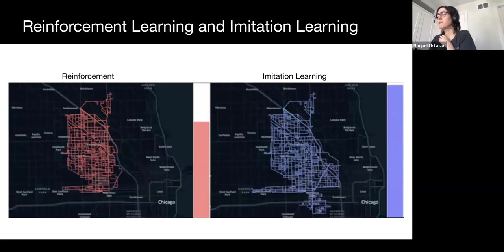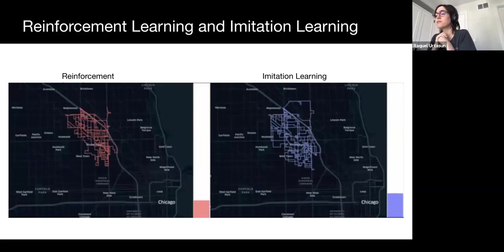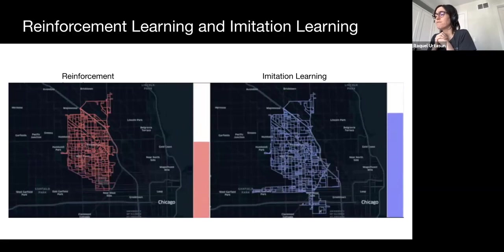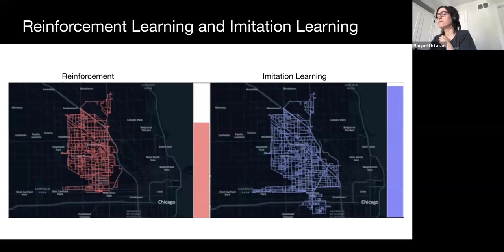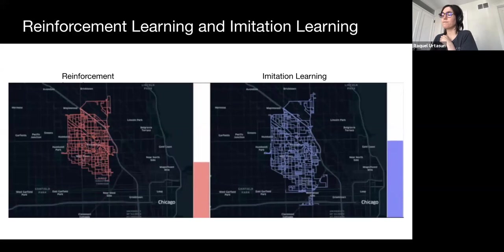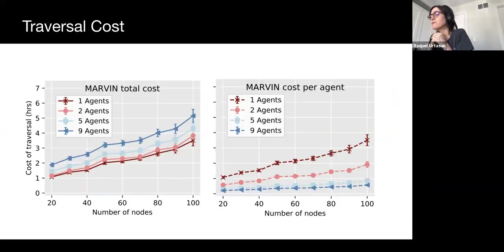We similarly compare the qualitative performance of agents trained with reinforcement learning to agents trained with imitation learning. When scaling to much larger graphs, we find that imitation learning agents are able to prioritize exploration while simultaneously ensuring that revisiting previously visited regions is done in an efficient manner.